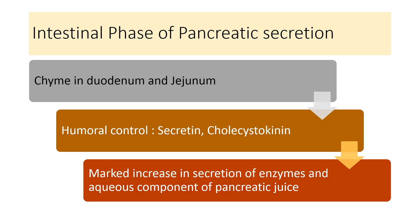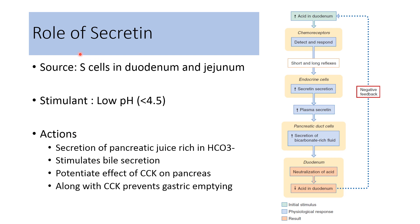Intestinal phase of pancreatic secretion starts when chyme enters inside the small intestine. Whenever chyme is present inside the duodenum and jejunum, it increases release of hormonal substances like secretin and cholecystokinin, which increases secretion of the enzyme as well as the aqueous component of the pancreatic juice. This is known as the intestinal phase of pancreatic secretion. Now I am going to give information about secretin as well as cholecystokinin.